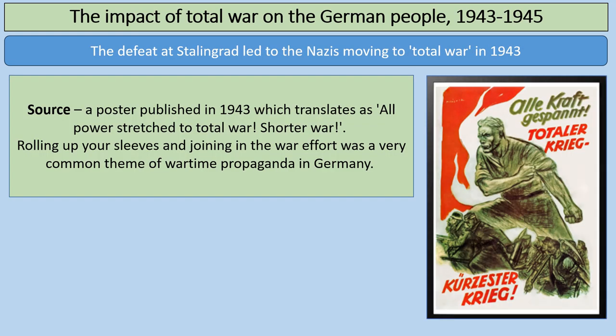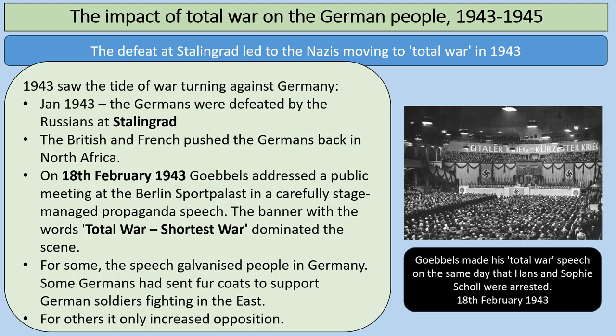The last element is the impact of total war on the German people. The defeat at Stalingrad on the Eastern Front led to the Nazis moving to total war in February 1943. In January 1943, the Germans were defeated by the Russians at Stalingrad and the British and French had pushed the Germans back in North Africa. So on the 18th of February 1943, Joseph Goebbels addressed a public meeting at the Berlin Sport Palace in a carefully staged propaganda speech. The banner said 'Total War, Shortest War.' The total war speech was all about galvanizing the German people to support the war effort — the idea that if everyone supported the war, it would end quicker. Some German people had already been sending things like fur coats to support German soldiers fighting in the East, another example of support for the war. For others, it only increased opposition.